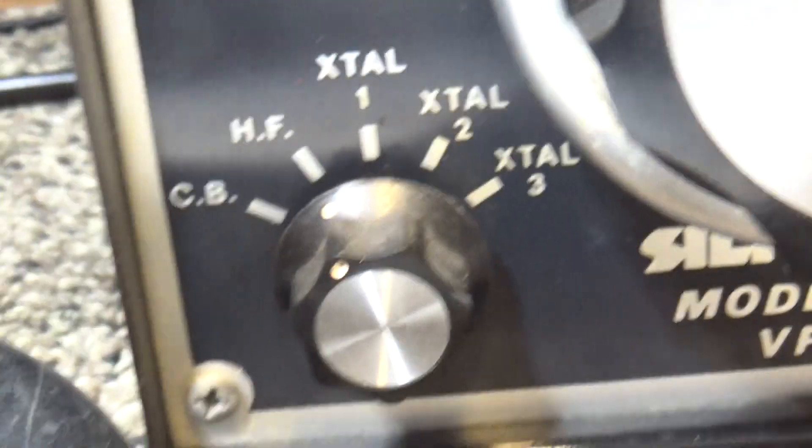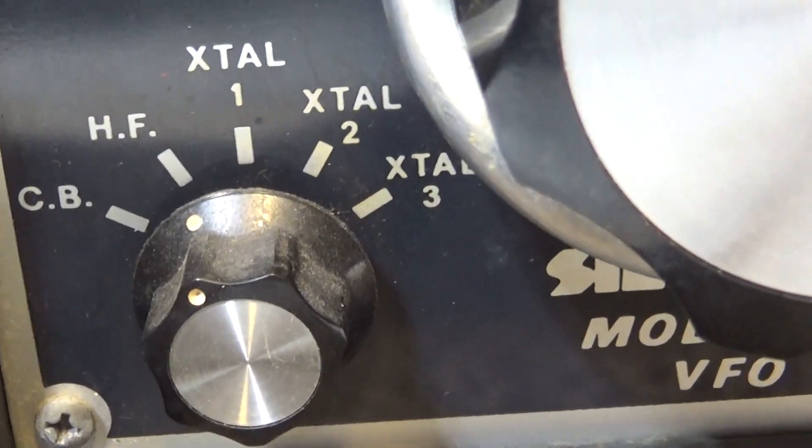Not only did they add the switch for CB and high frequency, they did add three crystal banks so you can stick in a crystal in there and it will be controlled by the frequency of the crystal, but that won't be variable. So you basically have either crystal control if you get the right crystal, let's say you're on channel 6 and you get a crystal for channel 6, you would go to crystal 1 here and you would be on channel 6 and the VFO would be inactive.